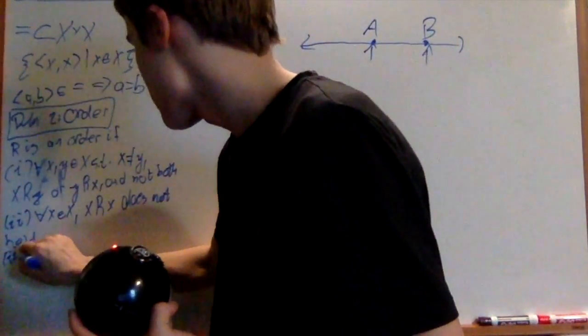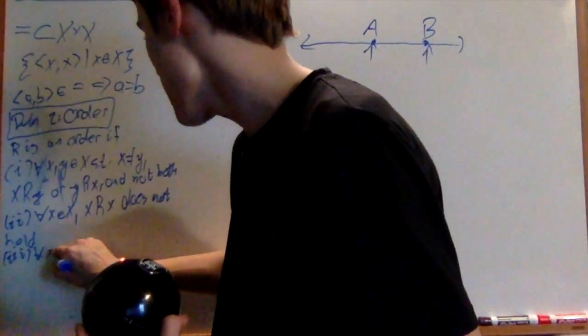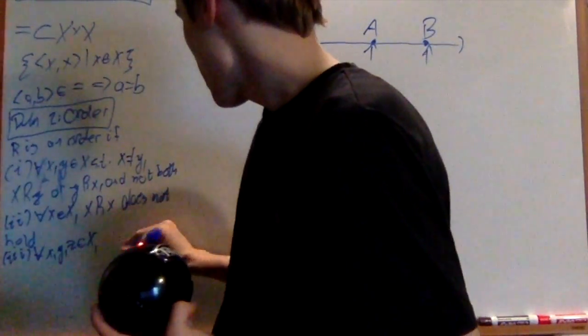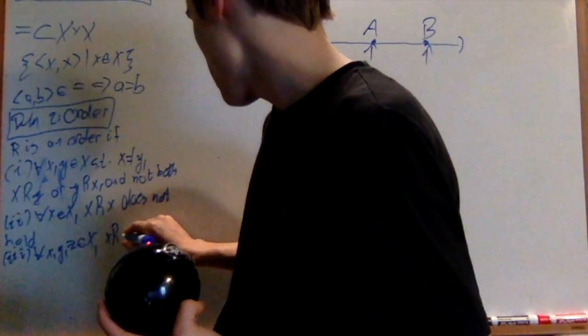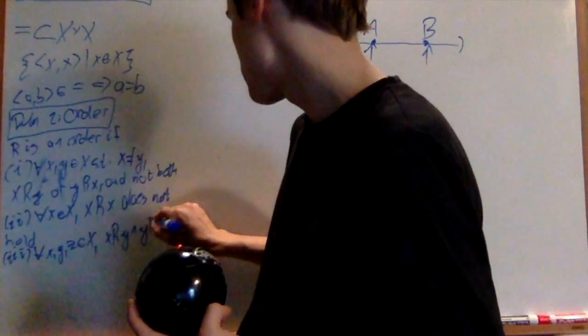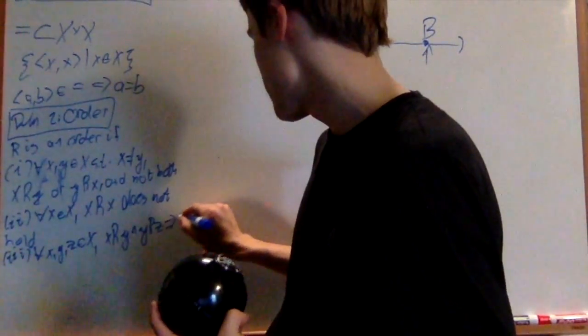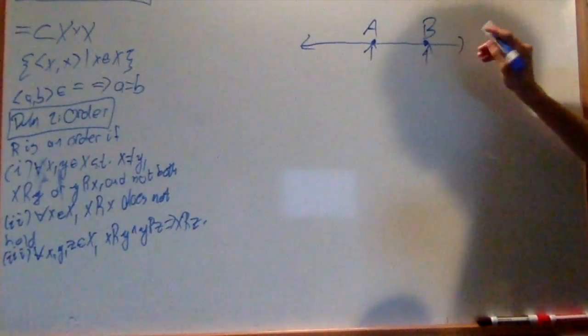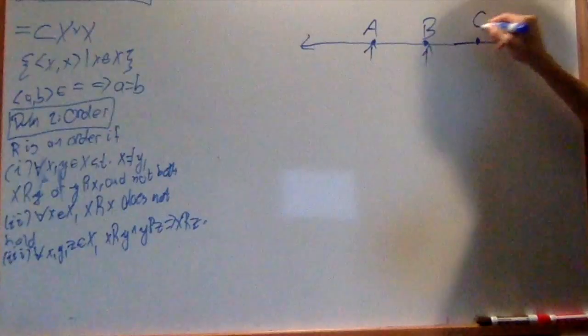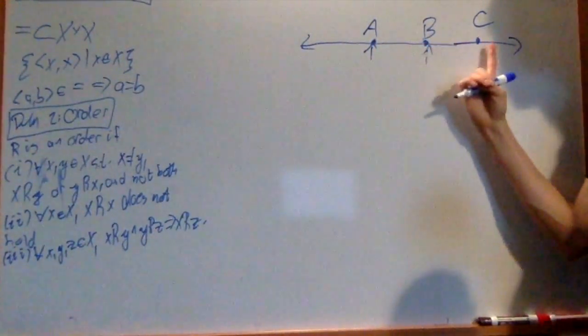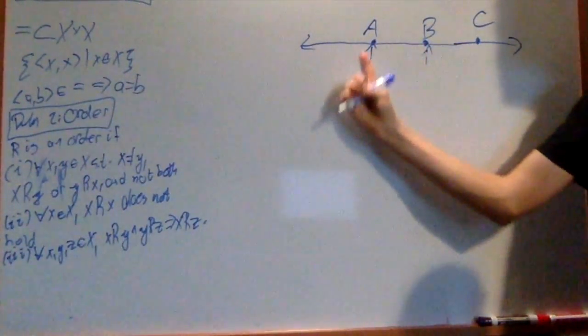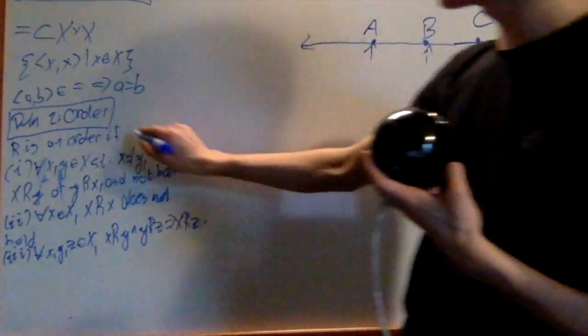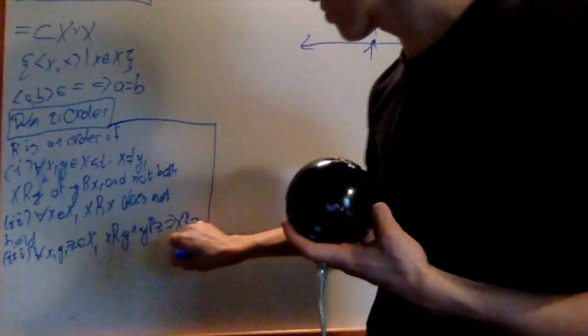And number three is that for any x, y, z an element of X, xRy and yRz implies xRz. So this is just a simple little thing right here. If a is less than b and b is less than c, then a is less than c. It's just translating this order. And these are the three conditions we need for this to be an order.